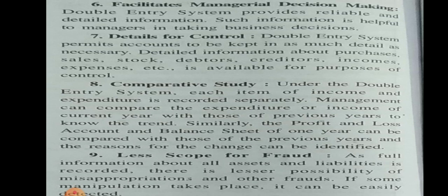The seventh point is detail for control. The double entry system permits accounts to be kept in as much detail as necessary. Detailed information about purchases, sales, stock, debtors, creditors, income, and expenses is available. Only reliable and necessary information is kept, and this information is very helpful and available for the purpose of control.